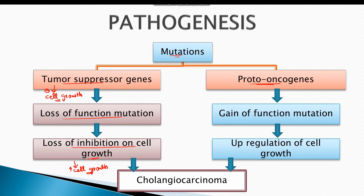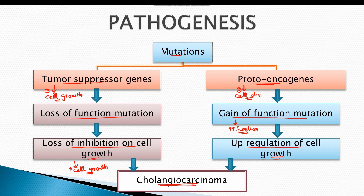Proto-oncogenes are genes which upregulate cell division and cell proliferation. In this case, the mutation is a gain of function mutation, meaning the mutation results in a multi-fold increase in the function of these genes, hence resulting in upregulation of cell growth. Mutations in tumor suppressor genes as well as proto-oncogenes together result in increased cell growth and proliferation, forming a tumor known as cholangiocarcinoma.